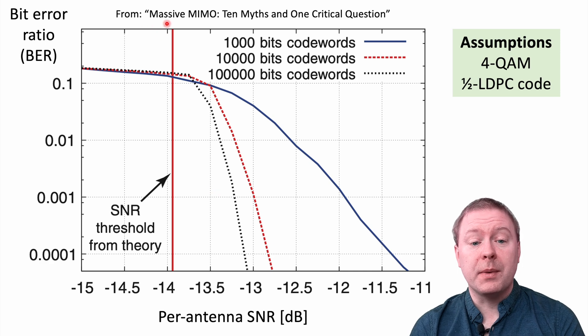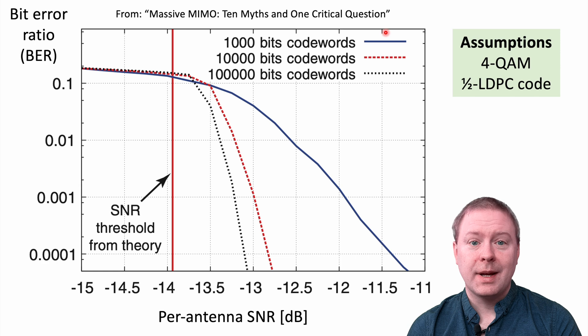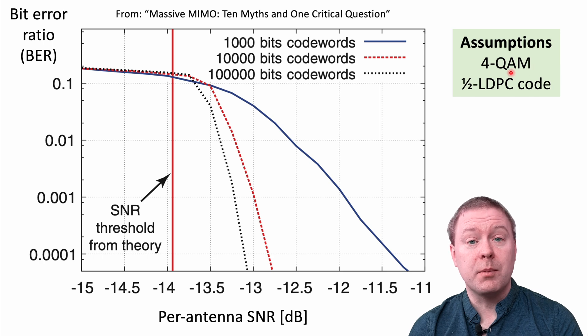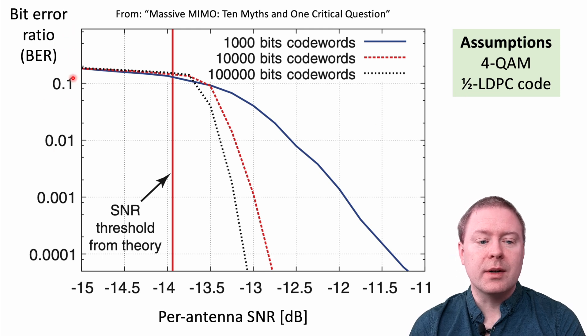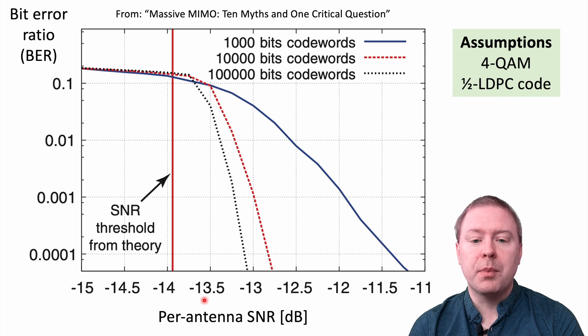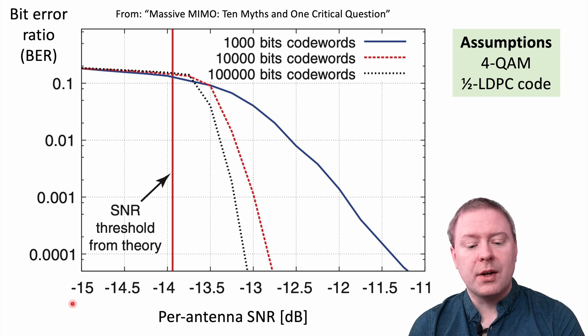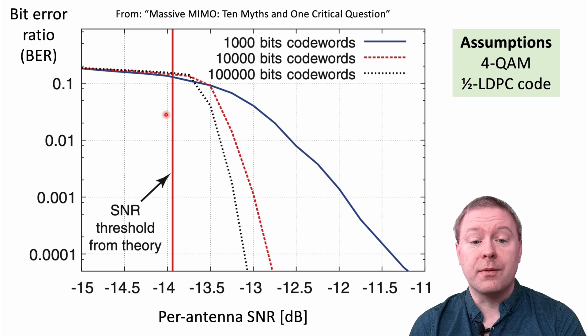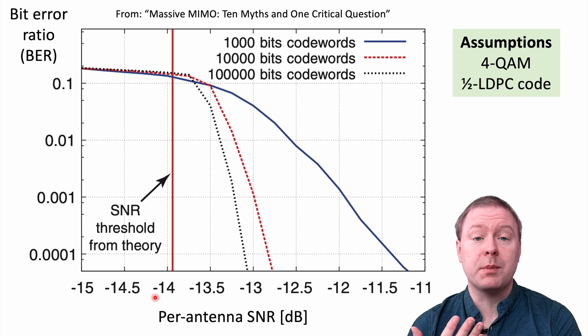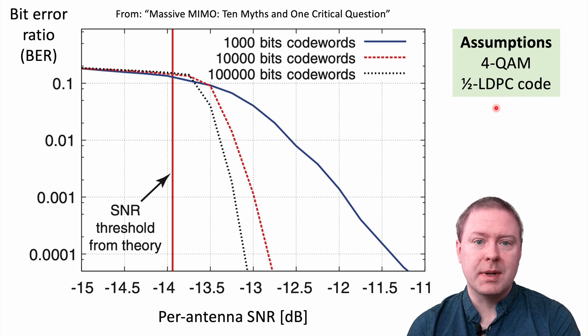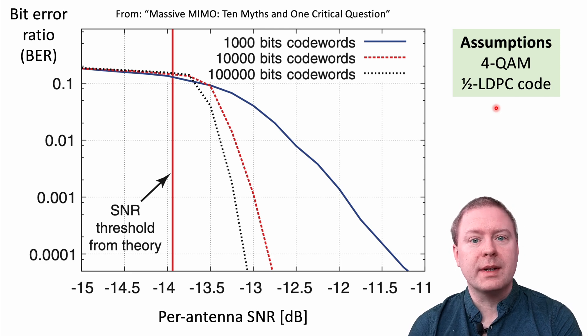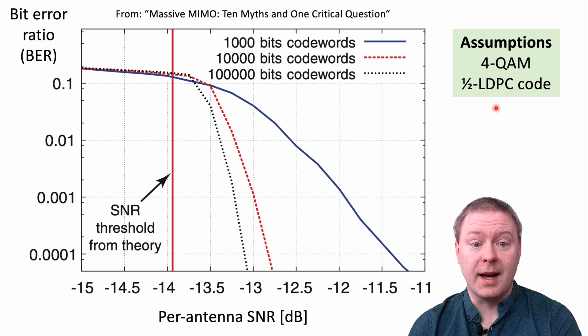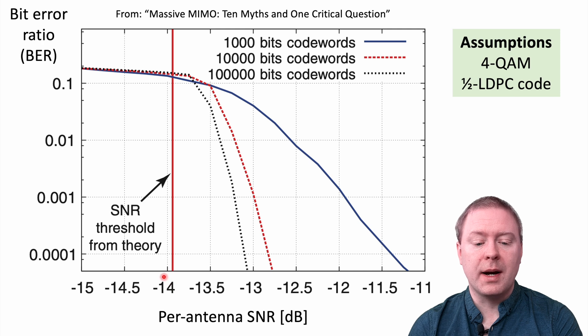So this is a simulation from the Massive MIMO 10 Myths and 1 Critical Question paper. There is a link in the description if you would like to read the exact details. But the point here is that we are transmitting with a modulation scheme called 4-QAM. We use a 1/2 LDPC code. And I'm showing you here the bit error ratio compared to the signal to noise ratio per antenna. This is a multi antenna system. The important thing is not the exact numbers here, but that there are four different curves. The first curve to consider is this straight line that comes from the channel capacity. So with this modulation scheme we are transmitting at a particular data rate, number of bits per second. If you use the capacity formula, you can figure out what kind of signal to noise ratio you would need in order to deliver that. And this is this value here, close to minus 14 dB.